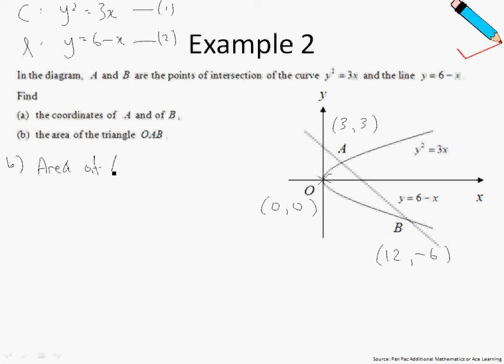So the area of triangle OAB is given by this formula. So half, and probably I'll start with the point O. So starting from O, I will go in an anti-clockwise direction. So from O, it will bring me to B followed by A.